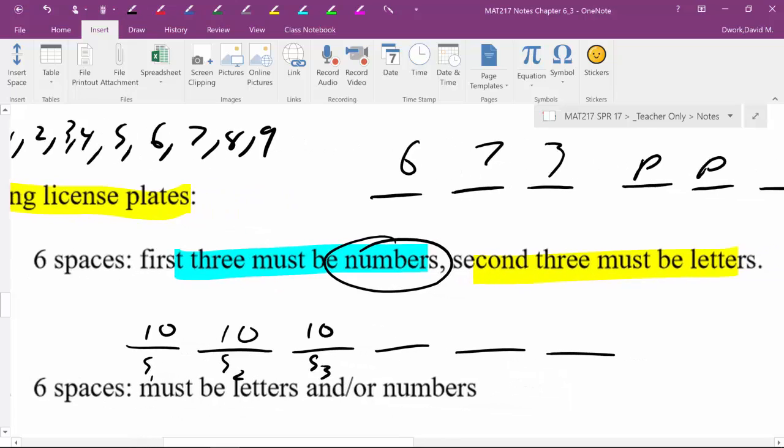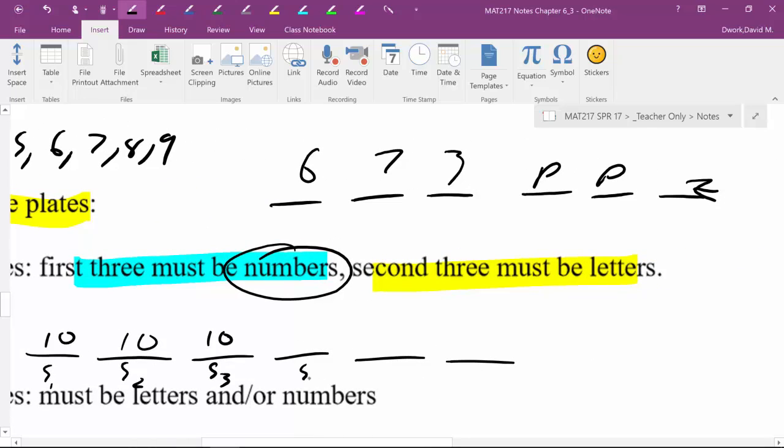Now for my second three spaces, they have to be letters. So for space four, space five, and space six, they have to be letters. How many different letters are there in the alphabet? Well, there are 26, right? If you count them up, A through Z, 26. So for space four I have 26 choices, space five I have 26 choices, space six I have 26 choices.